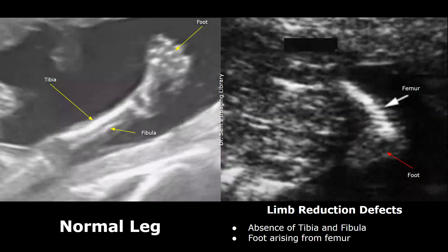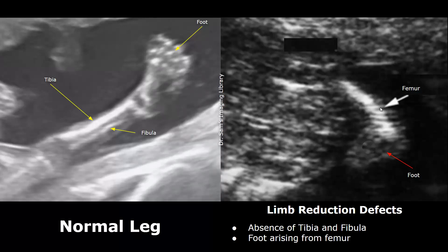Limb reduction defects are often associated with Edwards syndrome. Absence or reduction in size of any long bone can occur. The image on the left shows a normal leg and foot with both the tibia and fibula visible. The image on the right shows a femur without the presence of tibia and fibula — both are absent and an abnormal foot is arising directly from the femur.